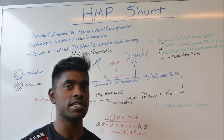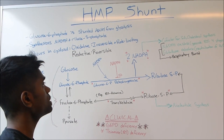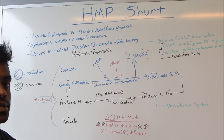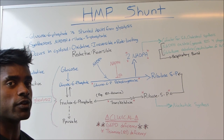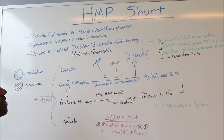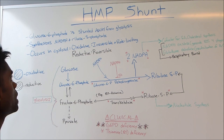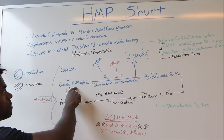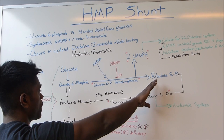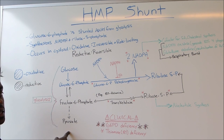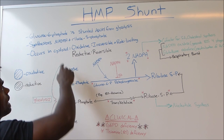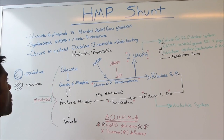For this lesson we're going to be talking about the HMP shunt. Refer back to my last video about respiratory bursts and this video will also make much more sense. The first thing you have to know about the HMP shunt is that it refers to how glucose-6-phosphate is shunted away from the glycolysis path towards the HMP pathway. The second important thing is that it synthesizes NADPH and ribose-5-phosphate.